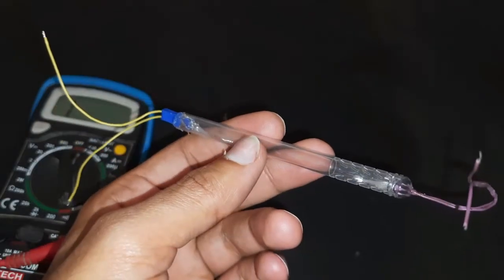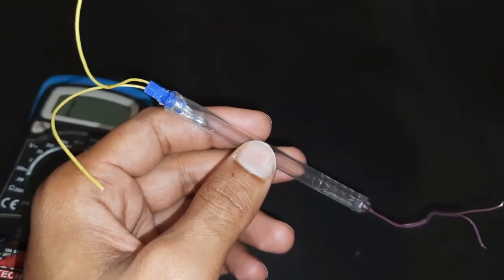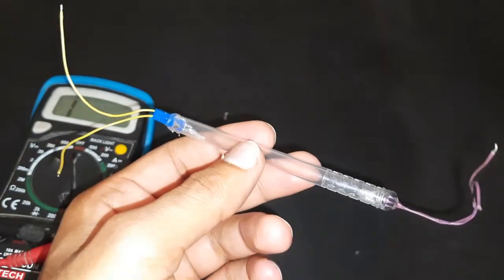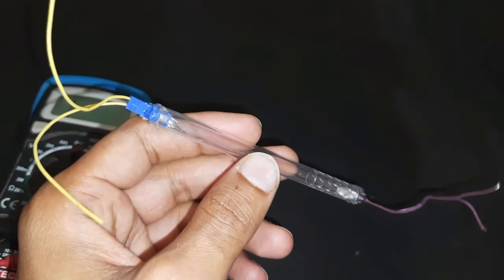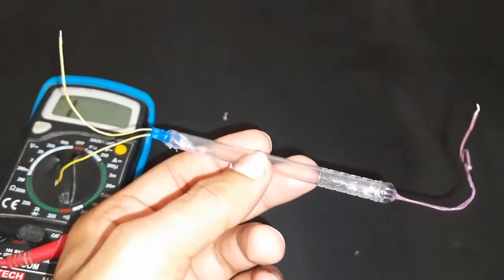So now whenever I tilt the rod, the mercury runs to the other end and shorts the pin. This way we got two switches which will trigger when the mercury reaches the end.